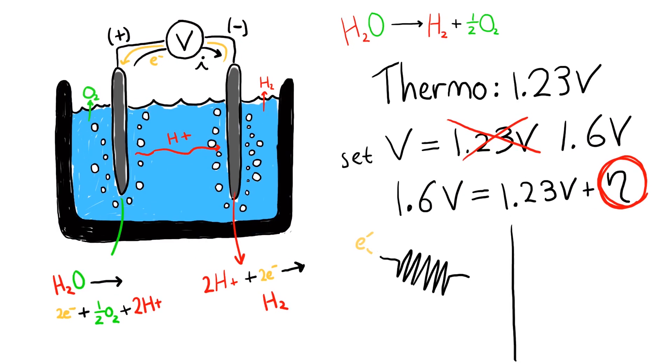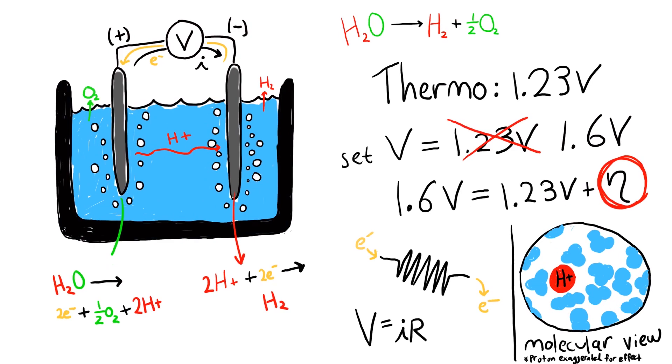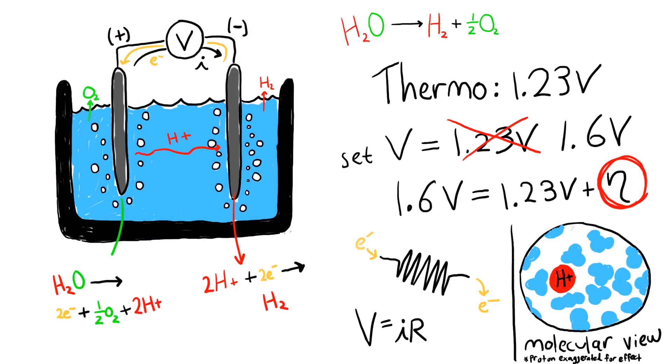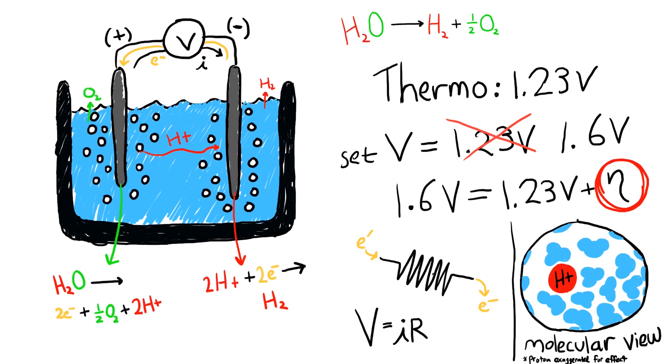Some of this overpotential comes from the electrical resistance in the system, or from the resistance of ions' ability to transport to the surface, but these only make up part of the overpotential. What we'll focus on today is the kinetic overpotential, the additional voltage required due to inherent barriers of chemical reactions.